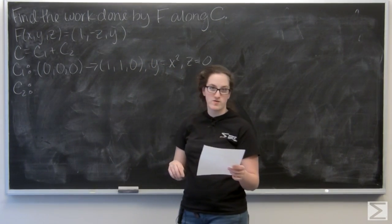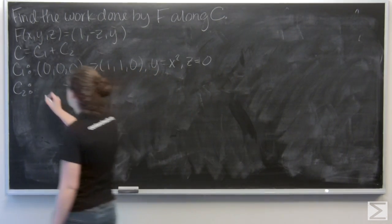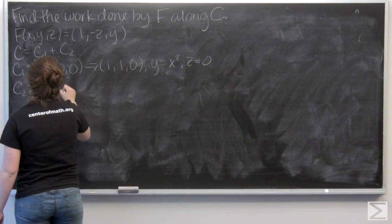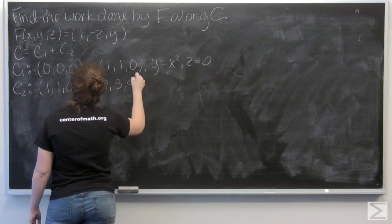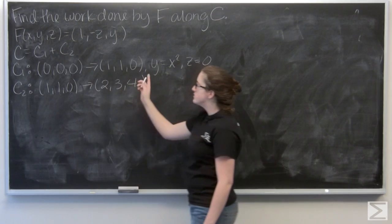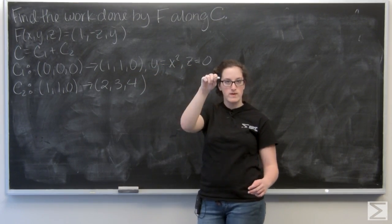And c2 is the line segment from (1,1,0) to (2,3,4). So I can see that my two curves connect at (1,1,0), and they kind of move up and then out.